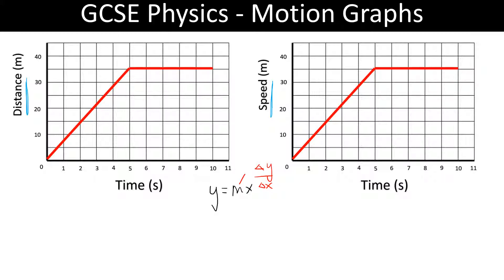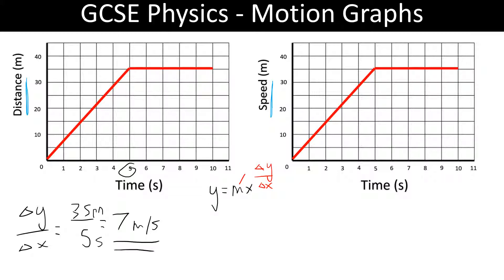For the distance-time graph, distance is increasing over time, so the gradient would be change in y over change in x — that's the change in distance, which is 35 metres, over the time, which is 5 seconds. That gives us a gradient of 7. The units can also be worked out the same way: 35 metres divided by 5 seconds gives us metres per second. The gradient here equals the speed, or if it's a displacement-time graph, the velocity.